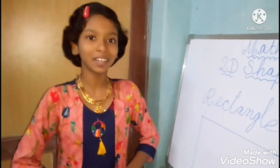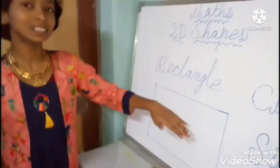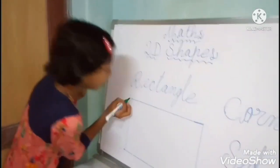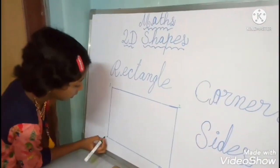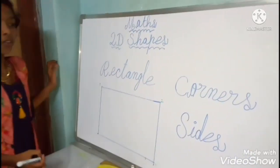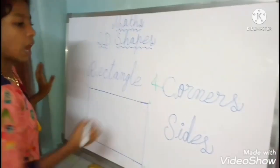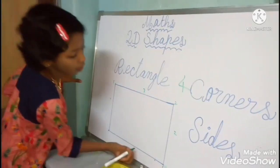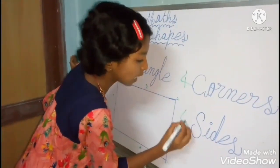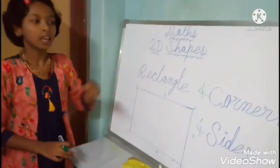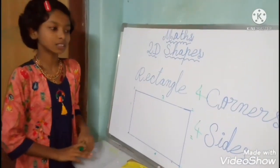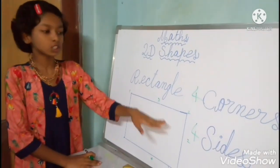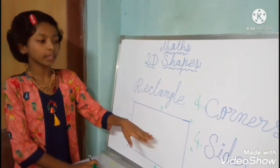Now I have drawn here one shape. This shape name is rectangle. Rectangle has one, two, three, four — four corners. And four sides. In rectangle, there are four corners and four sides. In rectangle, the right and left sides are short, and the up and down sides are very long.